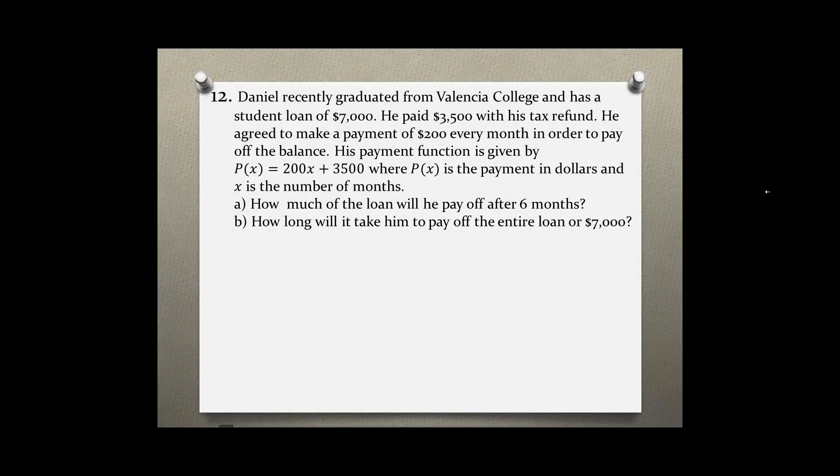Problem number 12. Daniel recently graduated from Valencia College and has a student loan of $7,000. He paid $3,500 with his tax refund and agreed to make a payment of $200 every month to pay off the rest of the balance. His payment function is given by P(x) = 200x + 3,500 where P(x) is the payment in dollars and x is the number of months.